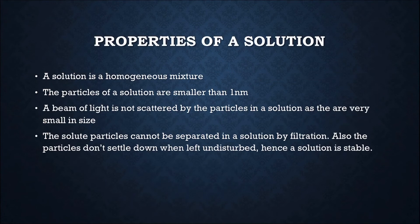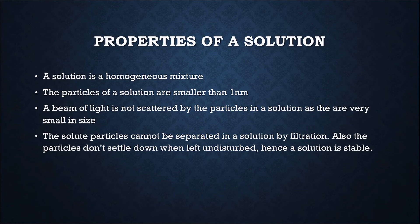Let's come to the properties of a solution. We know that a solution is a homogeneous mixture — that is, it is a type of mixture where the components of the substance are uniform. The particles of a solution are really tiny; they are smaller than one nanometer, which distinguishes them from a colloid or suspension. When a beam of light is passed through a solution, the particles are not scattered, as they are very small in size. The solute particles cannot be separated from the solution by filtration, and the particles don't settle down when left undisturbed. So, a solution is also called stable.